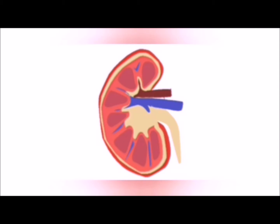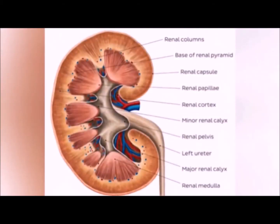The renal hilum is where the ureter and the renal vein exit and the renal artery enters the kidney. The renal hilum contains hilar fat, which is next to a water-filled cavity called the renal sinus. The renal sinus contains parts of the renal pelvis and the calyces, and separates these structures from the medullary tissue. Here is the labeling of the interior parts of the kidney.